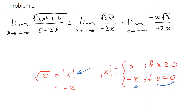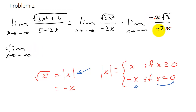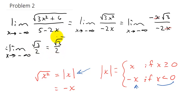Now the x's cancel out. We have a negative over a negative, which makes a positive, so that's the square root of 3 over 2. The limit as x goes to negative infinity of the square root of 3 over 2 is just square root of 3 over 2 — and there's our answer. I hope this video helped; check out my other videos, thanks.